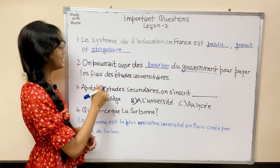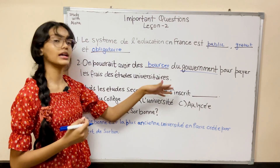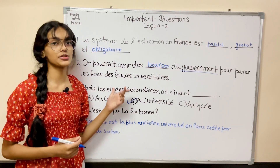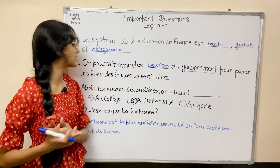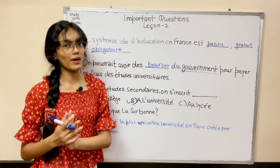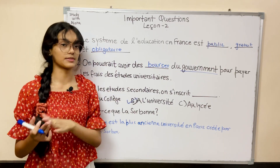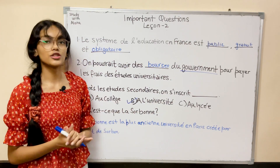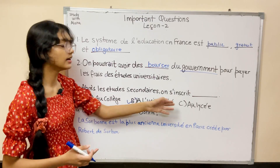Next question: après les études secondaires, we enroll in a — the answer is université. In case you get confused about whether the question is talking about India or France, just see that all these options belong to the French education system. They will usually mention 'in France' or 'in India' if there's ambiguity. We go to university after our secondary education, which is basically lycée.